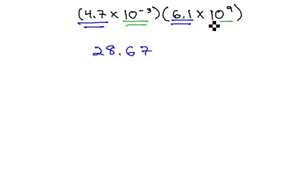We can then also combine the tens together, times 10, by using our exponent properties and adding the exponents together. Negative 3 and 9 is 6.